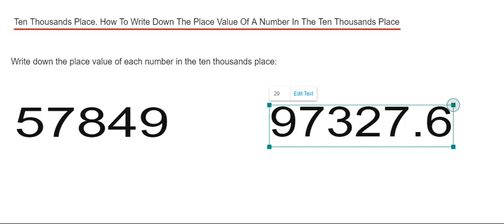Hi guys, welcome back. This is Maths 3000. I'm going to show you how to write down the place value of a number in the ten thousands place. To do this, we need to count five digits from the end or the right-hand side of the number. Let's have a look at example one.